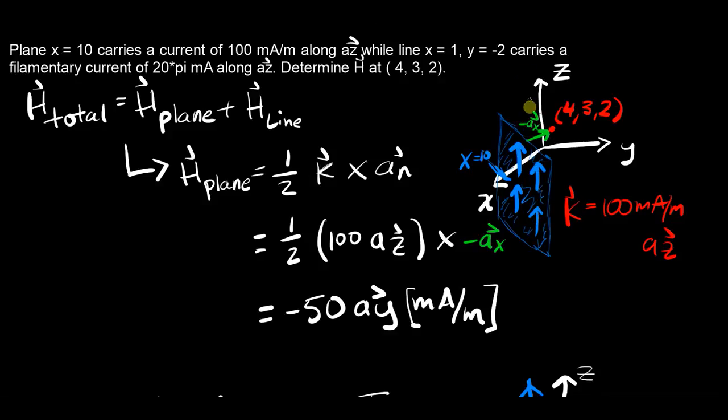They're all going in the az direction, and that's going to be important for when we're doing the cross product. So here, once we do our actual computation, there's a formula you'll find in your textbook that says the magnetic field intensity H of a plane can be found by multiplying one half into k cross an, where an is the normal vector out of the plane towards the point of interest.